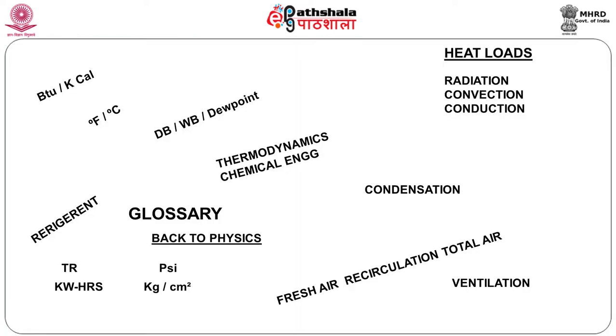The most basic unit you will keep referring to in air conditioning will always be the ton. The ton is not T-O-N; the ton is T-R, as mentioned in the slide — Ton of Refrigeration. We will see a little later what this ton of refrigeration means.